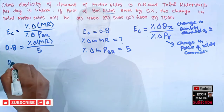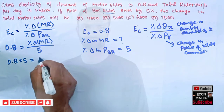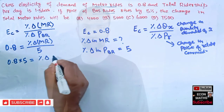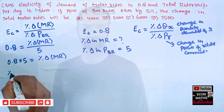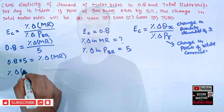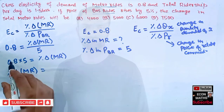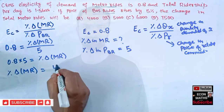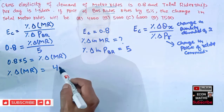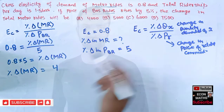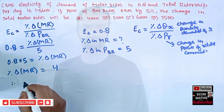Cross multiplying: 0.8 into 5 equals percentage change in metro riders. Therefore percentage change in metro riders equals 0.8 × 5 = 4%. So the percentage change in metro riders is 4%, but we still need to find the absolute change in total metro riders.